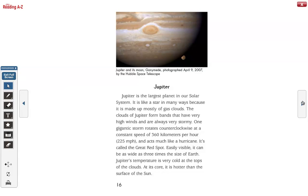Jupiter is the largest planet in our solar system. It is like a star in many ways because it is made up mostly of gas clouds. The clouds of Jupiter form bands that have very high winds and are always very stormy. One gigantic storm rotates counterclockwise at a constant speed of 360 kilometers per hour or 225 miles per hour and acts much like a hurricane. It's called the Great Red Spot, easily visible. It can be as wide as three times the size of Earth.